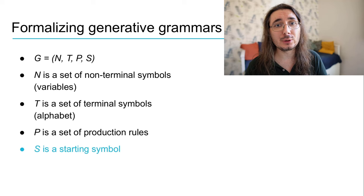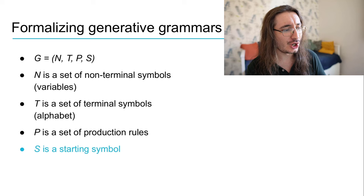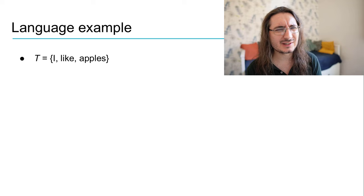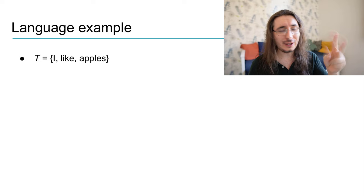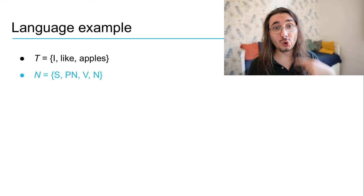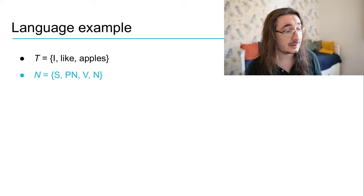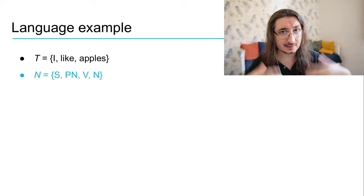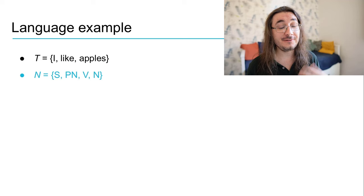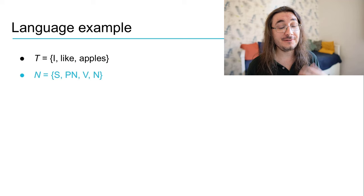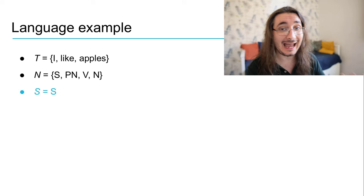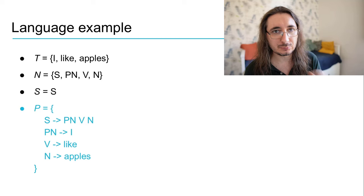I'm going to give you a simple linguistic example of a generative grammar so that we can understand all these abstract concepts easily. In this grammar the terminal symbols are: I, like, and apples. For the non-terminal symbols — the variables or placeholders — we have four: capital S standing for sentence, PN for pronoun, V for verb, and N for noun. The start symbol is capital S, the sentence.